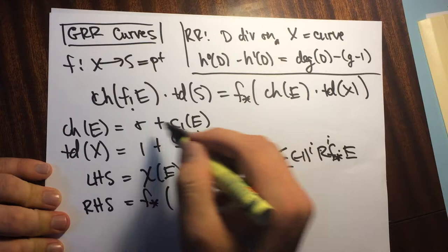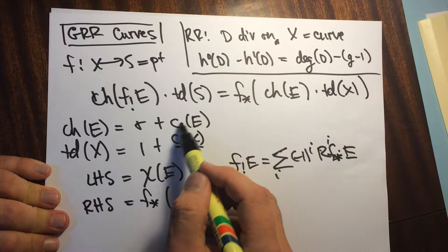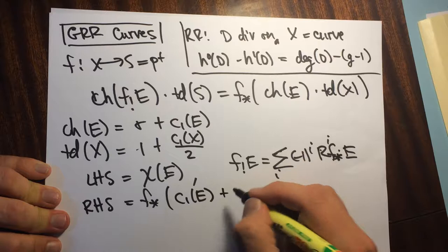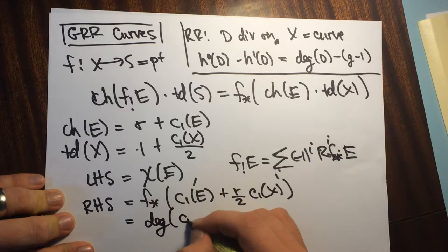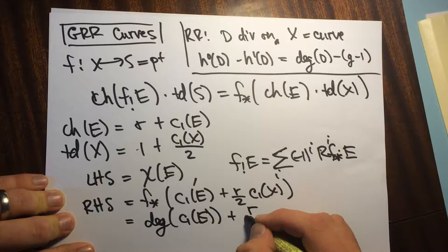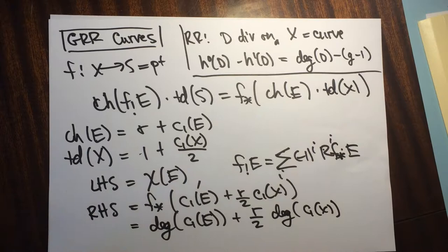The right-hand side is the push forward of the combination of these two things. We only need to look at the top degree terms since we're pushing forward. The top degree things will be C1 of E plus R over 2 times C1 of X. This becomes the degree of C1 of E plus R over 2 times the degree of C1 of X.